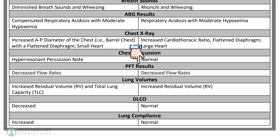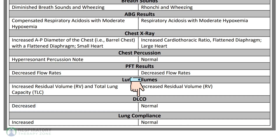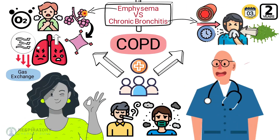PFT results for patients with both emphysema and chronic bronchitis will show decreased flow rates. Lung volumes for emphysema patients will show increased residual volume and total lung capacity; for chronic bronchitis it will also show an increased residual volume. A diffusing capacity for carbon monoxide test for patients with emphysema will be decreased, and for patients with chronic bronchitis it will be normal. Lung compliance for emphysema is often increased, and for chronic bronchitis it is often normal.